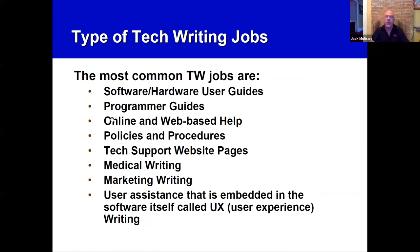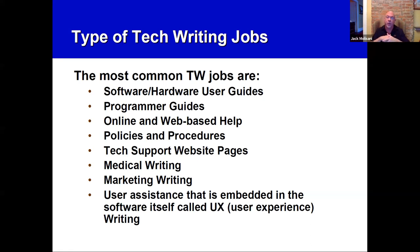The most common types of technical writing jobs include software and hardware user guides, programmer guides — especially popular in the Bay Area since software packages interface with each other and someone has to document that — online help, policies and procedures, tech support websites, medical writing, marketing writing, and UX writing, which is the text embedded in software itself. There are many many types; these are just a few of the more common ones.